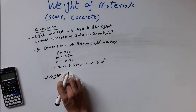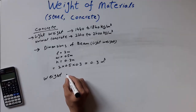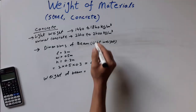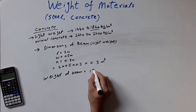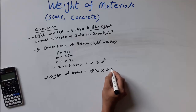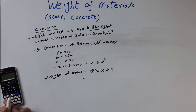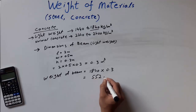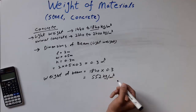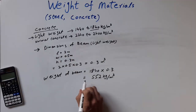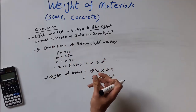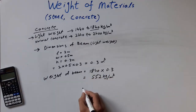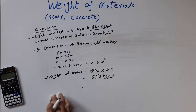The weight of the concrete beam: taking the higher density value of 1840 kg per cubic meter multiplied by the volume of 0.3 cubic meters gives the weight of our lightweight beam. You can do the same for a normal concrete beam — just calculate the volume, multiply by the density, and that's it. Thank you for watching, please don't forget to subscribe.